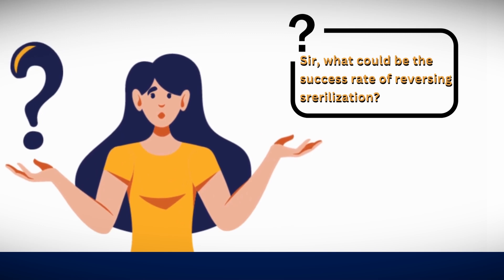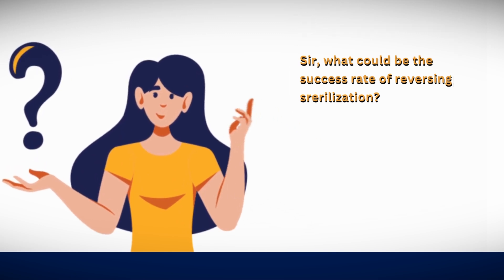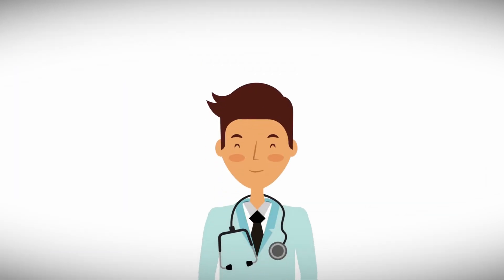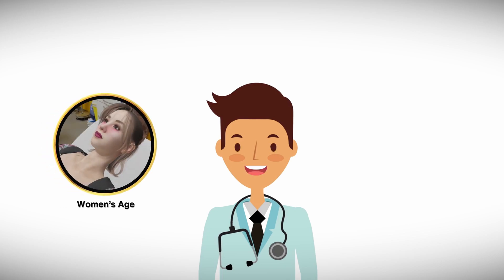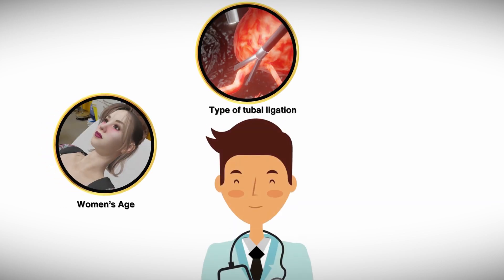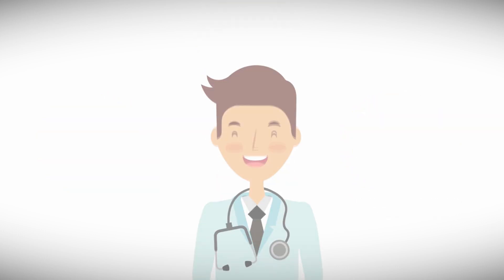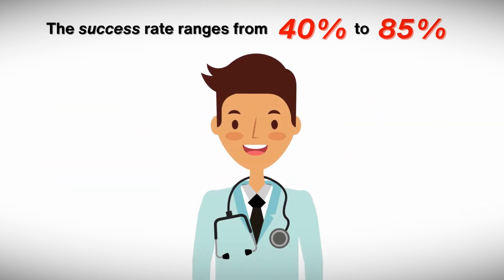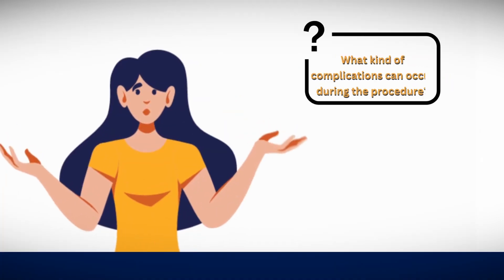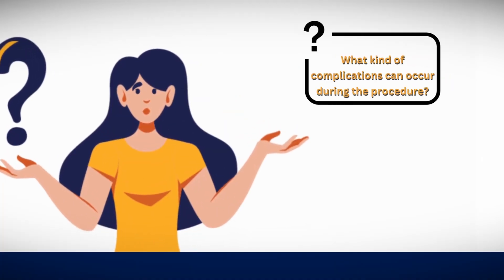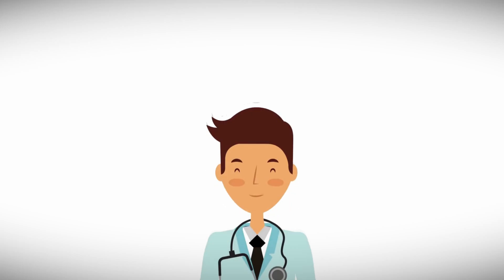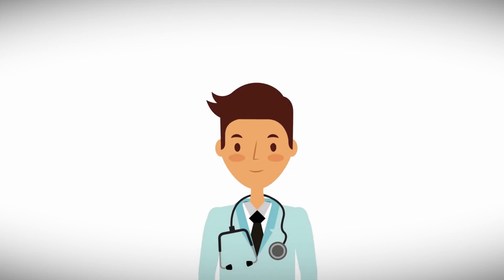Let's listen to the specialist's insights. The success rate of reversing sterilization is based on various factors such as the woman's age, the type of sterilization, and the length of the remaining fallopian tube. On average, the success rate ranges from 40 to 85 percent.